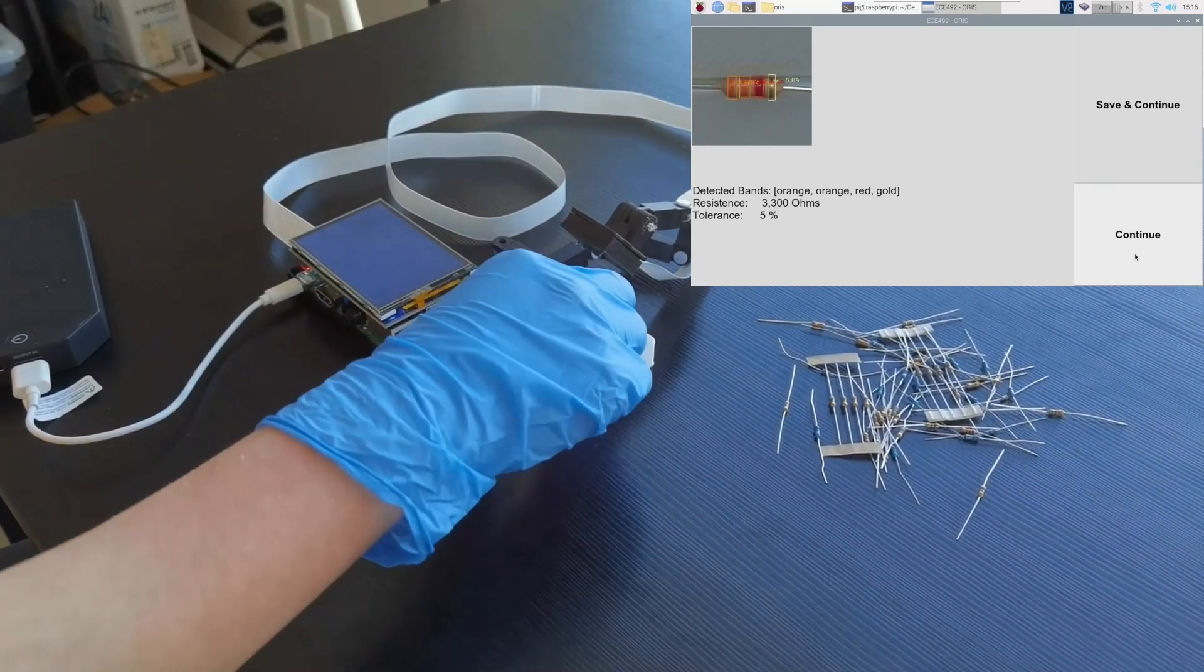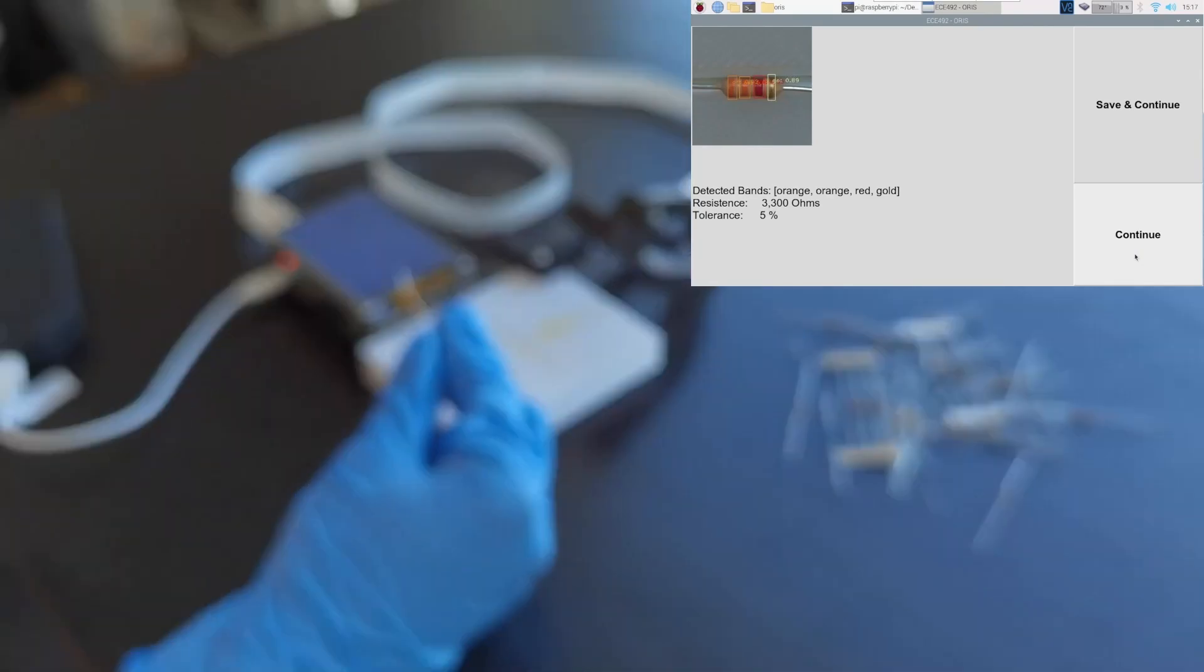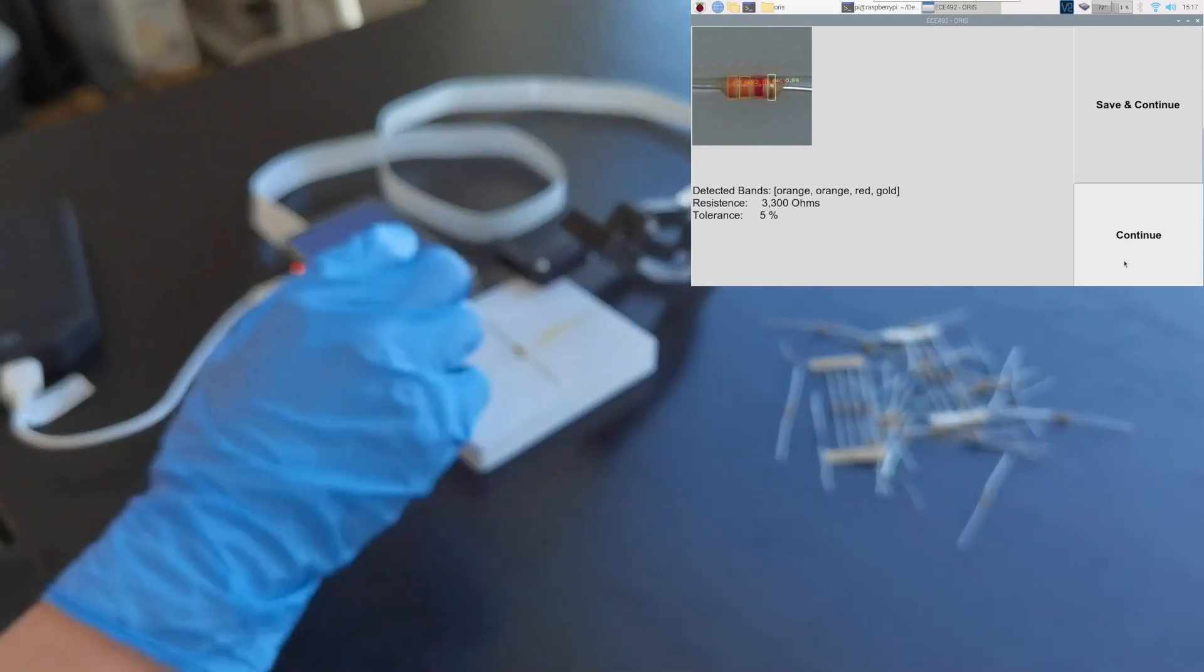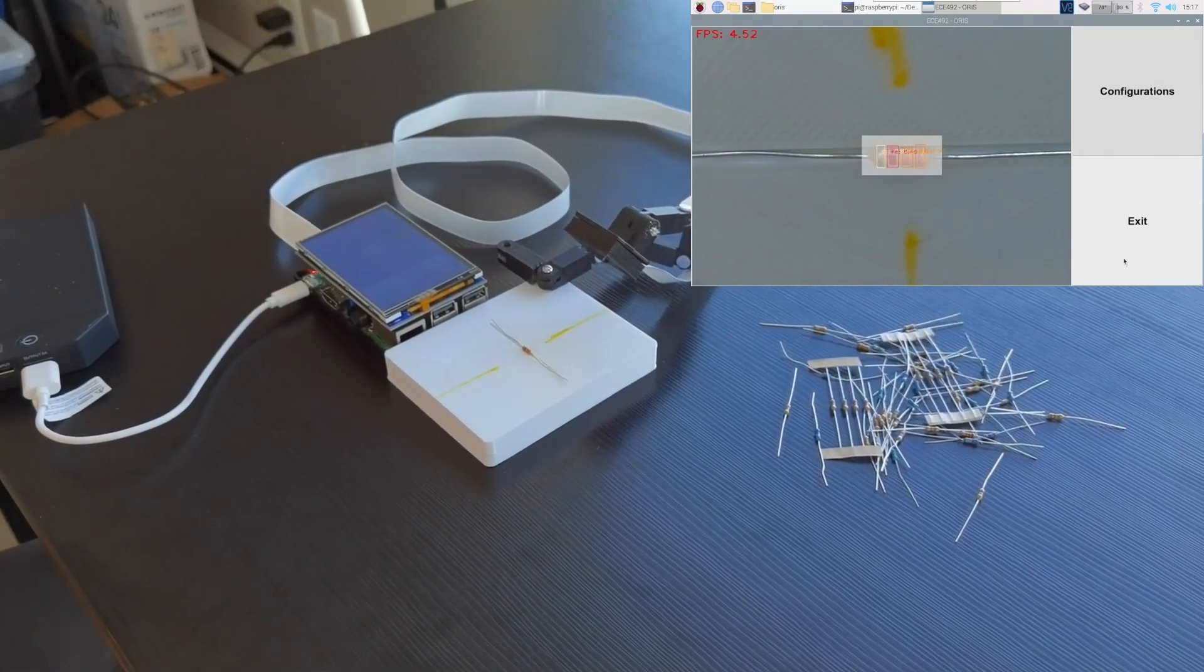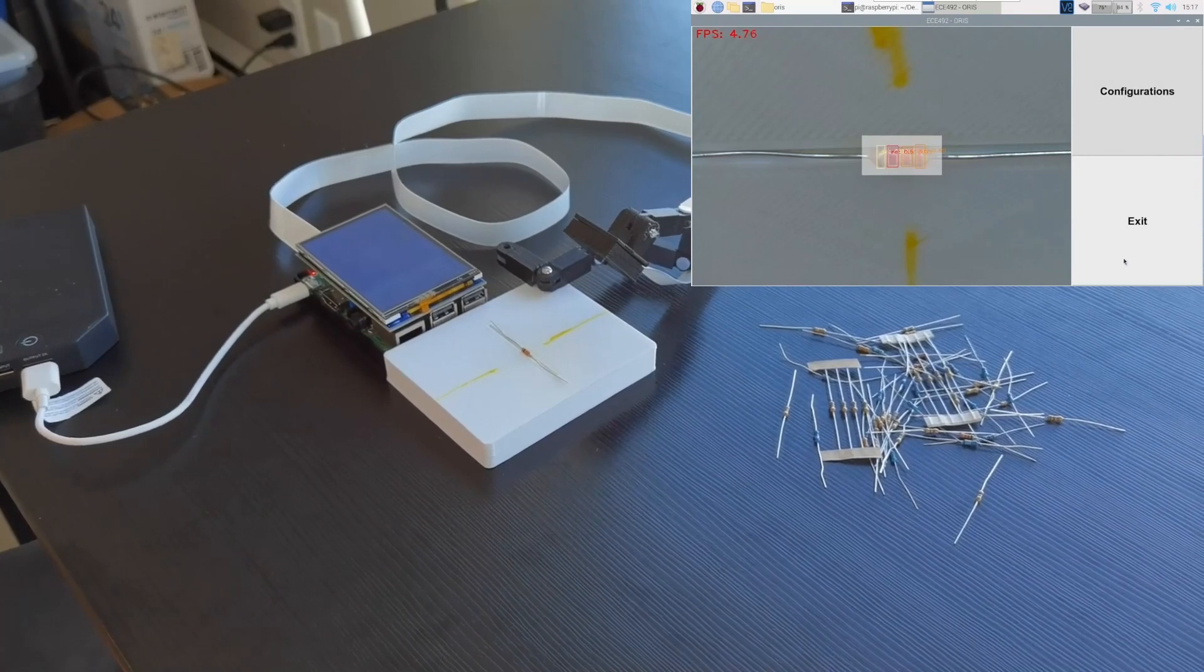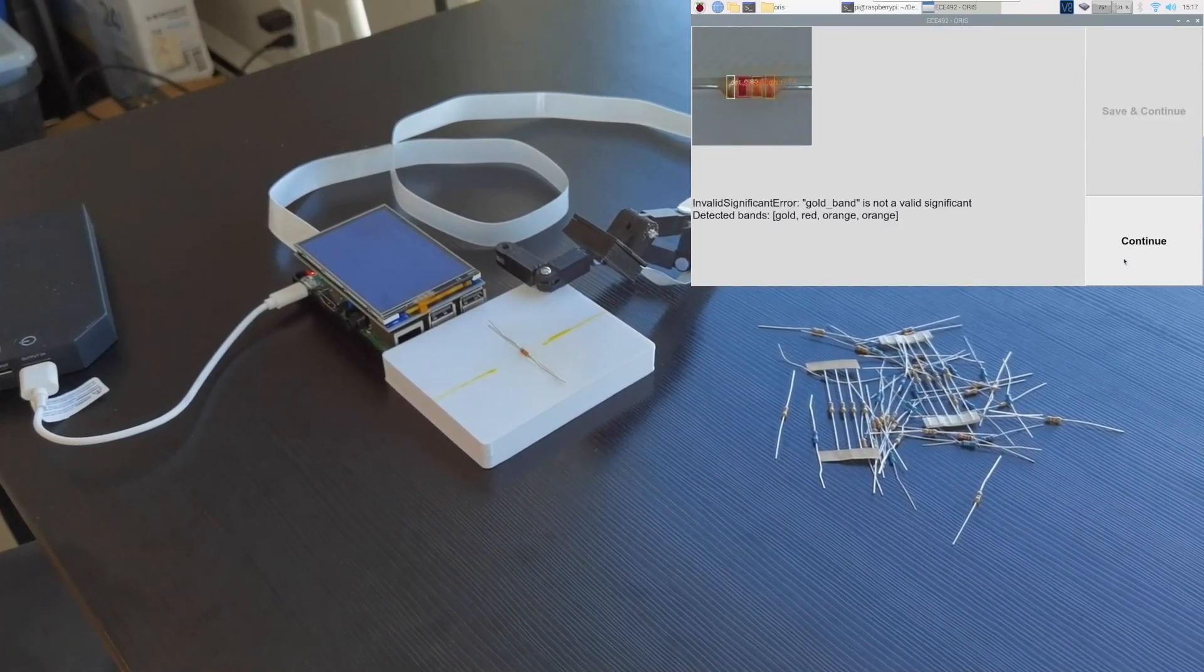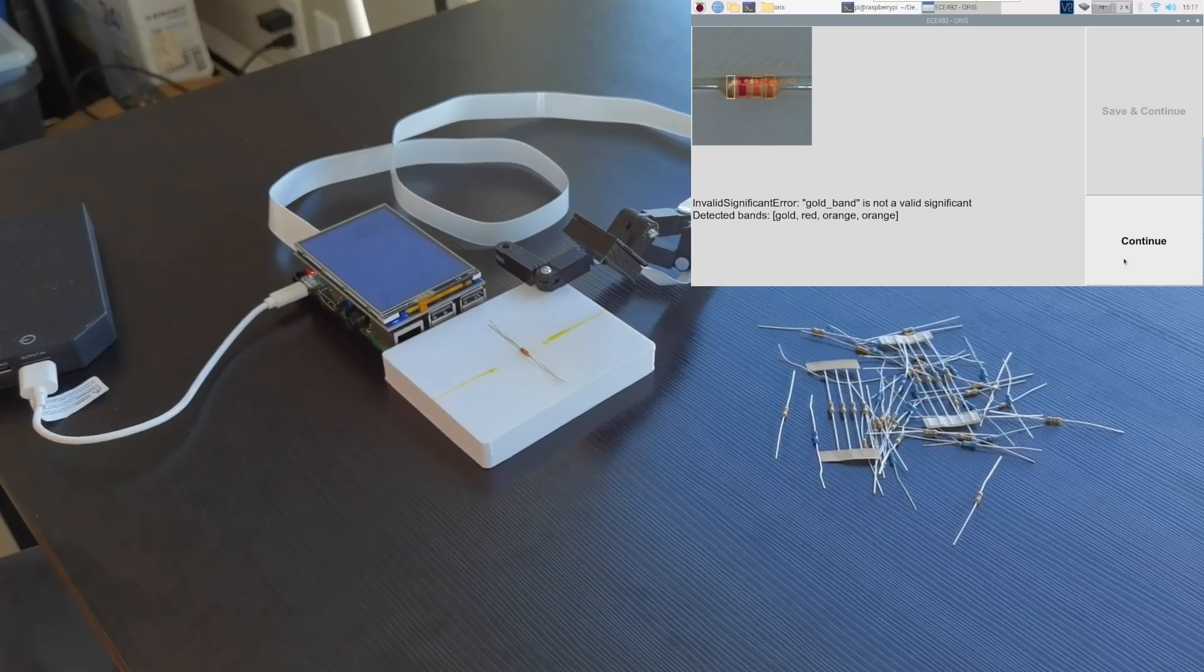Now, if the resistor is placed incorrectly on the platform, the ORIS still attempts to interpret the resistor, but after it has acquired all the color bands, we will find out that the resistor is invalid and notify the user.